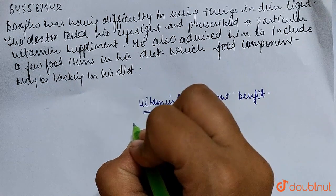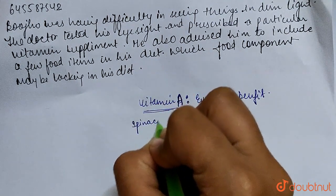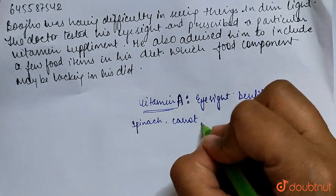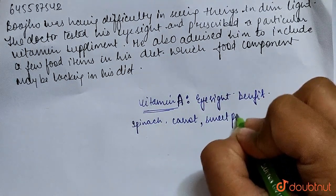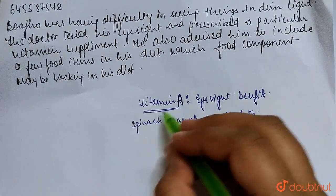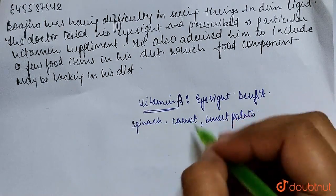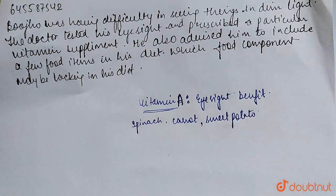Foods rich in Vitamin A include spinach, carrot, and sweet potato. All these food items are rich in Vitamin A. If we include these in our diet, the Vitamin A level in the body will be good and our eyesight will not be weak. Thank you.